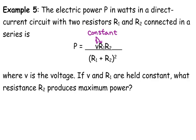And the question is what resistance R2, so we are solving for R2, produces maximum power. When I read maximum anything, I am thinking derivative equal to zero, and I'm solving for some value. I'm going to find my critical points, and then I'm going to go from there.